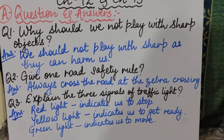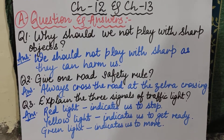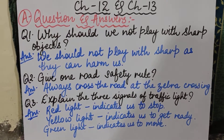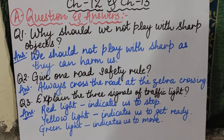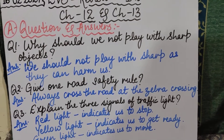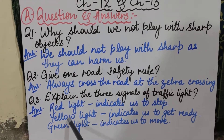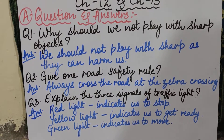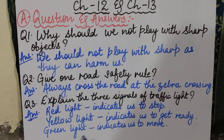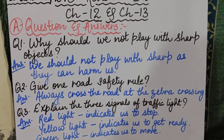Now the third question: Explain the three signals of a traffic light. Whenever you go on the road, at every crossing there are traffic light signals with three colours. The first is red light, which indicates us to stop. The second is yellow light, which indicates us to get ready — we know the next light is coming. The third is green light, which indicates us to move. Is that clear?